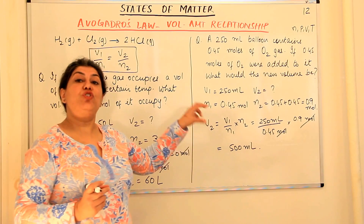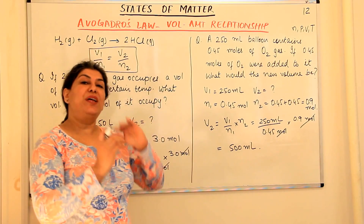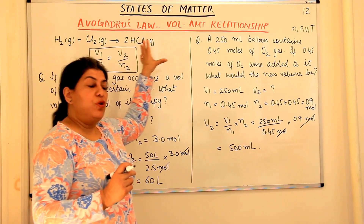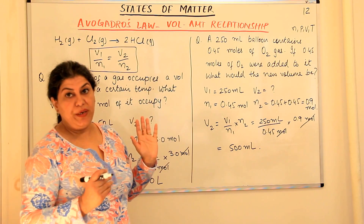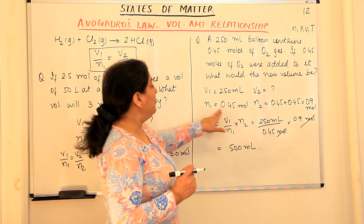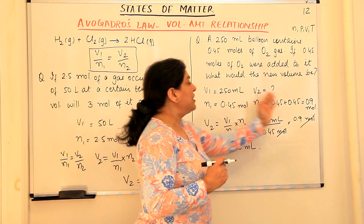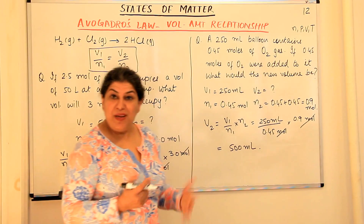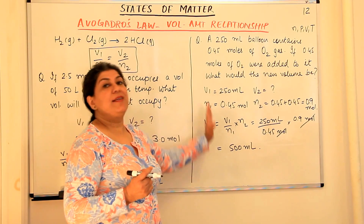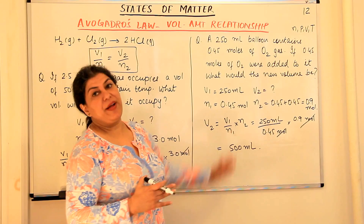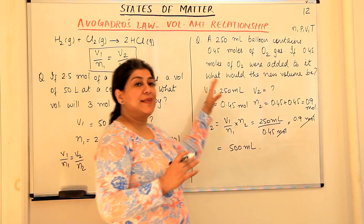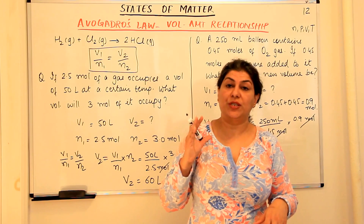Whenever you solve a problem and get your result, always try to verify whether, according to the law, your answer is correct. Avogadro's law says when volume increases, number of moles also increases. V₁ was 250 ml with 0.45 mol; in the second case the number of moles doubled to 0.90, so volume should also double. Our calculation shows the volume did double to 500 ml — confirming the law and that our answer is correct. This verification approach applies to all numerical problems for all the gas laws.